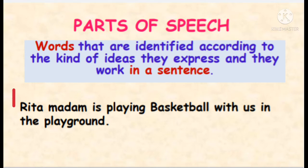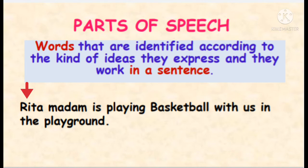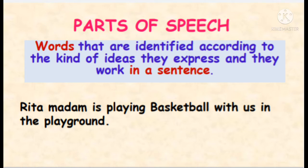In a sentence like 'Rita madam is playing basketball with us in the playground': Rita is a name, madam is an address, is playing is something being done — it is a work. Basketball is the name of a game, with indicates the connection between two people, us is used instead of our names, in indicates position, and playground is the name of the place. So each word used here is a part of the speech — a component of the sentence.